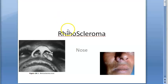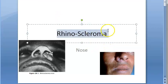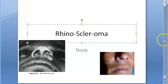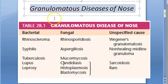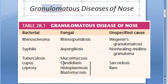In this video, let us look at rhinoscleroma. 'Rhino' means nose, and 'scleroma' refers to a granulomatous condition. So rhinoscleroma is a granulomatous disease of the nose. We have already seen granulomas in tuberculosis and leprosy — similarly, rhinoscleroma also involves granuloma formation.